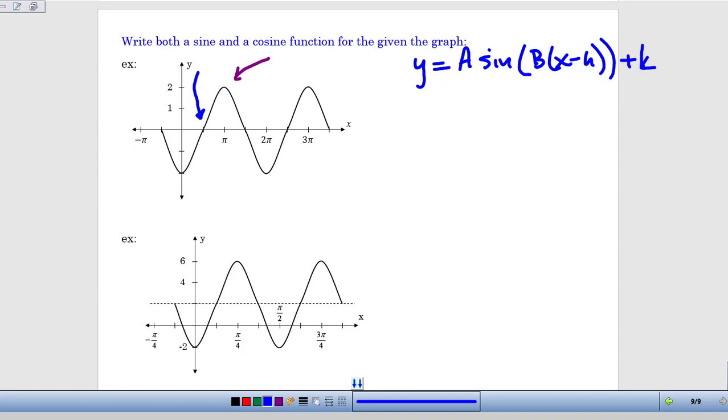First off, I can see that I have no vertical translation. The graph is centered on the x-axis. So the k is going to end up being zero, so it's just not going to be there. I'll put that in as plus zero for right now, but really we'll be able to eliminate it in a minute.